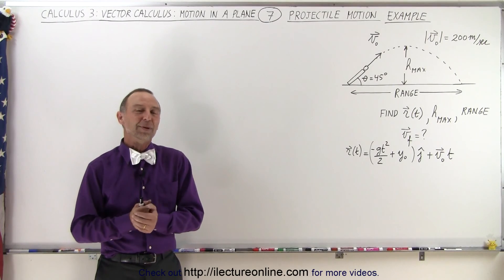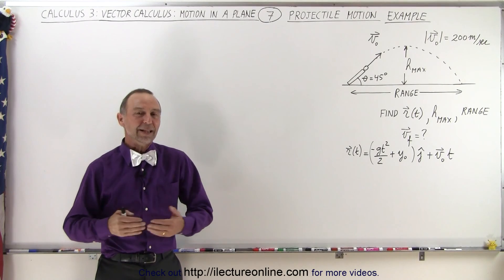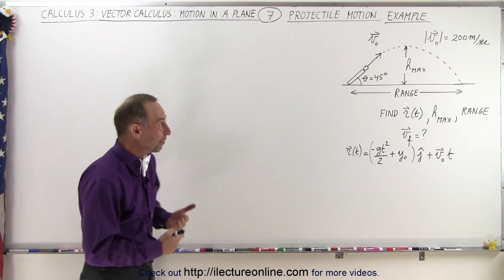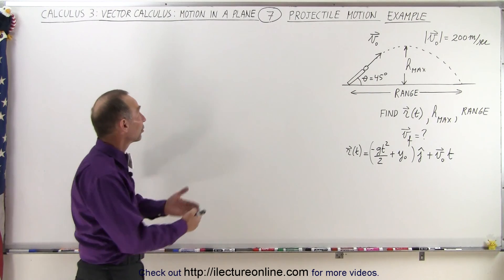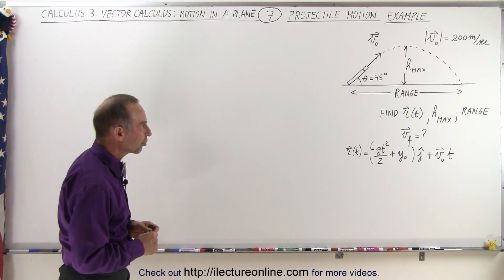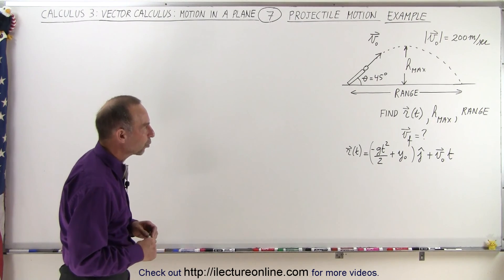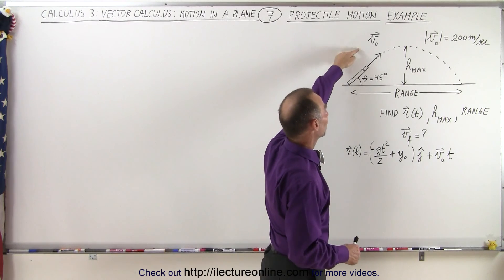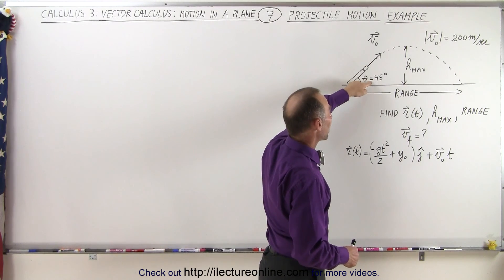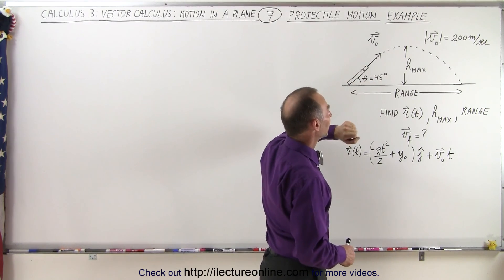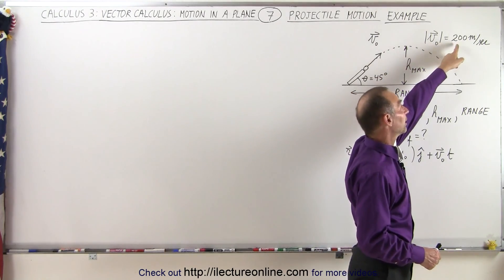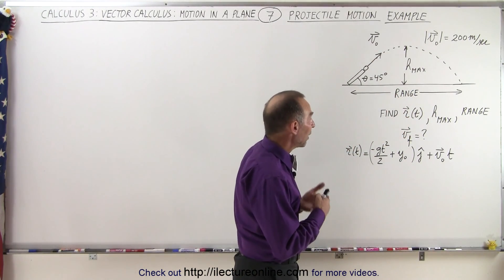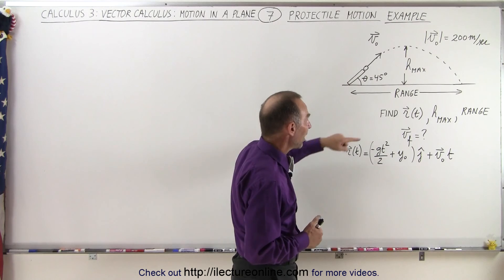Welcome to Electronline. Let's do an example of projectile motion using vector notation and motion in a two-dimensional plane. We have an object being shot out at some initial velocity at a 45-degree angle. The magnitude of the initial velocity is 200 meters per second.